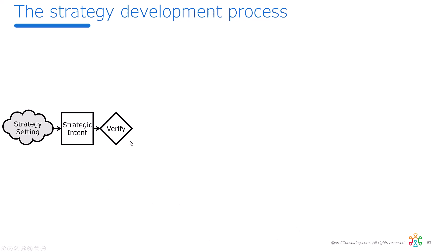Once we get the strategic intent, we need to validate it. In other words, if we achieve these elements of the strategic intent, would it help us achieve our overall strategy? If yes, and we've got the capacity and resources, then we take the next step: we're going to break that bigger picture intent into some specific goals.